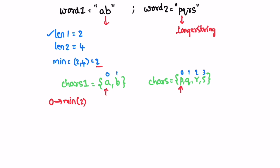We point at index zero in both strings and create a StringBuilder for our output. Inside the loop we append the character from cars1 — 'a' — and then from cars2 — 'p'. We increment both pointers, now pointing at index one. We append 'b' from cars1 and 'q' from cars2. Now i equals two so the loop condition fails. We've finished iterating through the shorter string, and our result contains the interleaved characters from both strings up to that point.